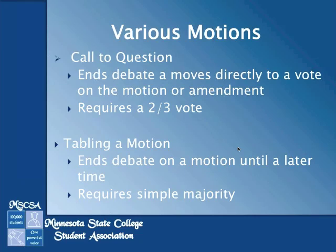Another motion you might see is to table a motion. This would end debate on a motion until a later time in the meeting, and requires a simple majority vote to approve. One thing to keep in mind: this is commonly misused. If you need to do more research on a motion and the majority wants to put it off for another week, it should actually be a motion to postpone until that next meeting. If motion to table is used and the decision is not approved by the end of the meeting, the motion is killed and has to be re-debated at the next meeting.